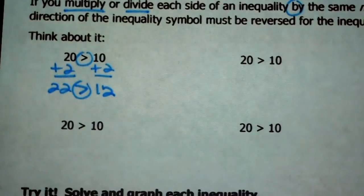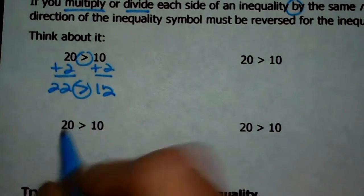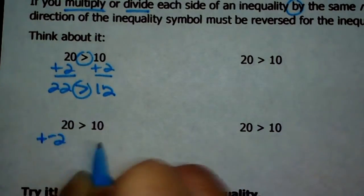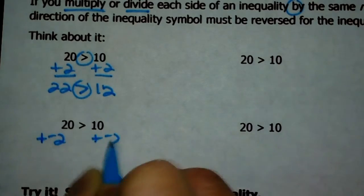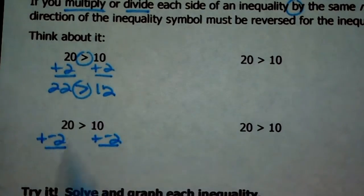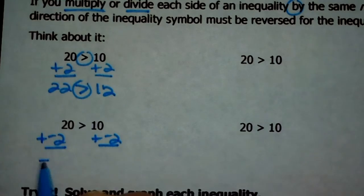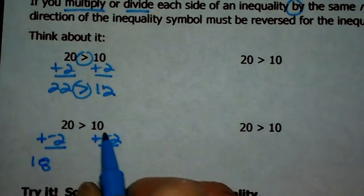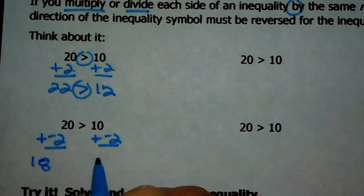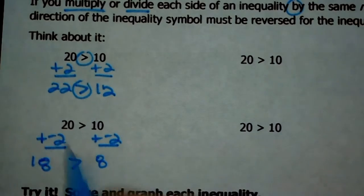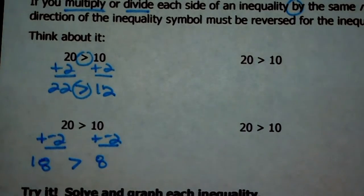Okay, underneath that one — because we talked about multiplying or dividing negatives — what if we added a negative? Would that make it untrue? If you take 20 plus negative 2, that's 18. And if you take 10 plus negative 2, that's 8. Is 18 still greater than 8? Yeah. So that one's fine — that's not a big deal if you do that.